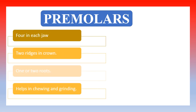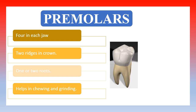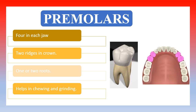Now let us talk about the premolars. Premolars are 4 in each jaw, so they are a total of 8 inside the mouth. They have 2 ridges in their crown and may have 1 or 2 roots. They help us in chewing and grinding the food. The arrangement of the premolars is shown in the figure — they are the teeth found next to the canines inside the jaw.